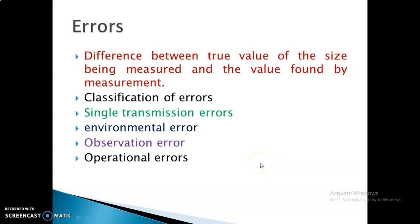The topic we are going to discuss is error. What is error? According to a human, if a person is doing something incorrect, that is an error. The same way, for an instrument also, if the instrument is not showing the correct value, then it is producing errors. Error is the difference between the true value of the quantity being measured and the value found by measurement. The error is: measured value minus true value.